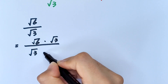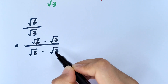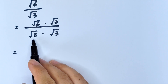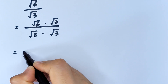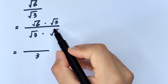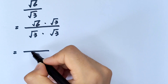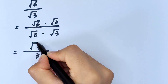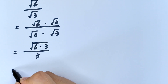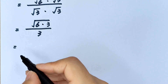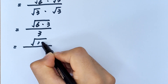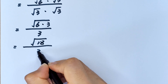over square root of 3 times square root of 3. Square root of 3 times square root of 3 equals square root of 3 squared, which equals 3. And square root of 6 times square root of 3 equals square root of 18. So we have square root of 18 over 3.